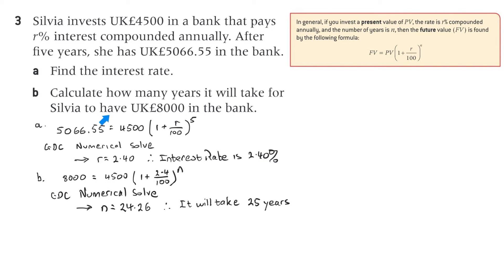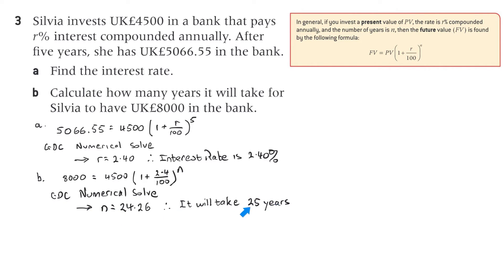Part B: calculate how many years it would take for Sylvia to have £8,000 in the bank. The future value is £8,000, the present value is £4,500, and the interest rate is now known to be 2.4%. Use the solve function on your calculator and you get 24.26, which the book rounds up to 25 full years — a little inconsistent, but that's the given answer.